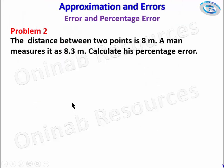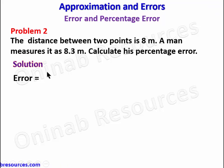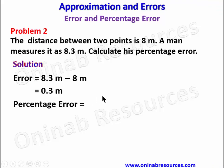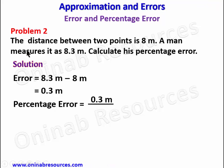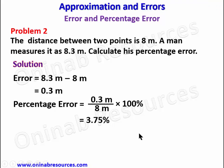We go to problem two. The distance between two points is eight meters; a man measures it as 8.3 meters. Calculate his percentage error. In our solution, the error is measured value minus actual value: 8.3 minus 8 equals 0.3 meters — this is a positive error. The percentage error is 0.3 over 8 times 100 percent, which gives 3.75 percent. That is the error committed by the man in measuring the distance between the two points.